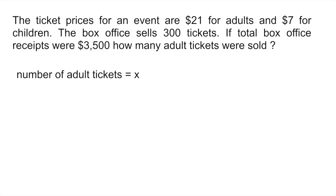We do know that the box office sells 300 tickets. So if we wanted to know how many children's tickets we sold, we would simply subtract 300 minus the adult tickets. That would give us the number of children's tickets: 300 - x.